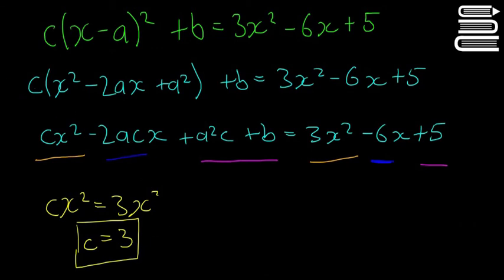Next one, we're going to do this one here. I'll do this in dark blue. We're going to have minus 2acx is equal to minus 6x. Okay, get rid of the x's. It's going to be minus 2ac is equal to minus 6.